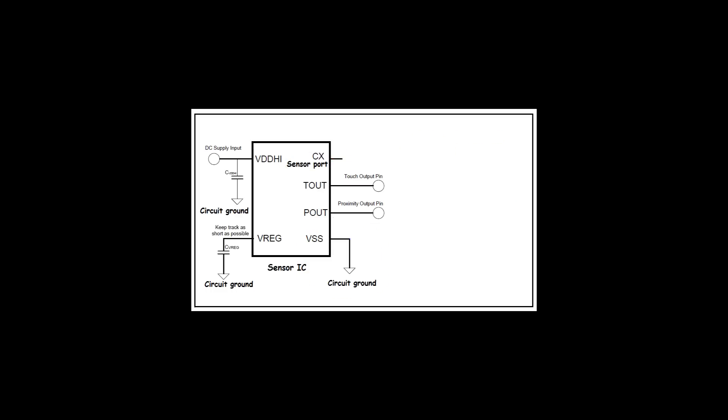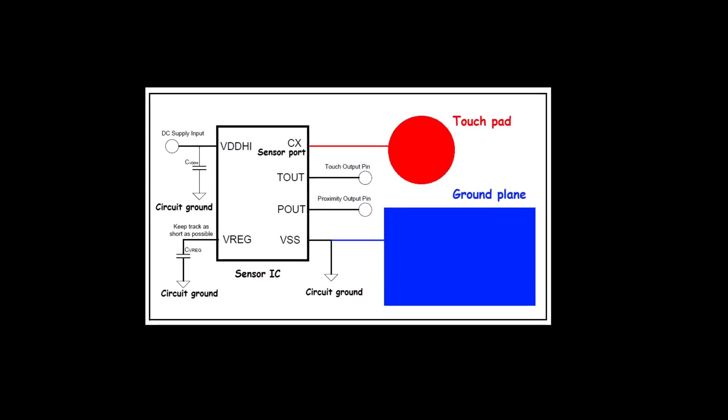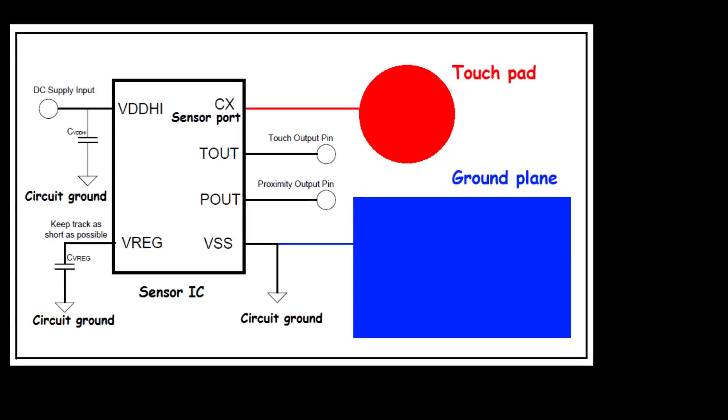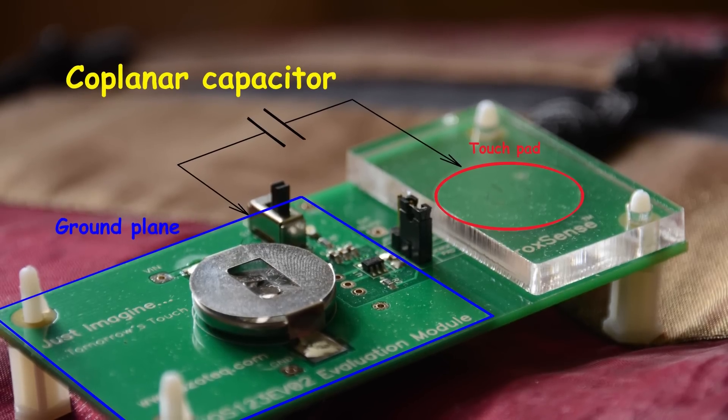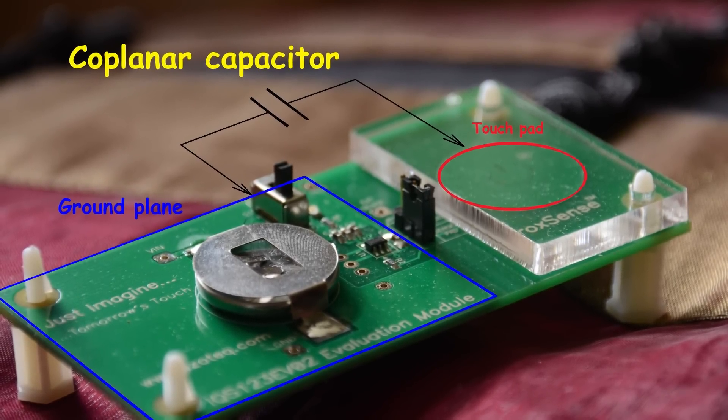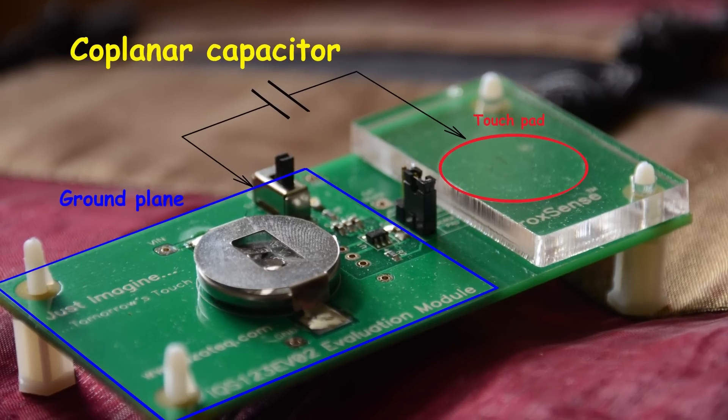Two conductive plates are required, one connected to the sensor port and the other one to the circuit ground to form a capacitive transducer. So the ground plane is not just like a shield in a standard PCB layout design, but it is also an indispensable part of a two-plate capacitor.